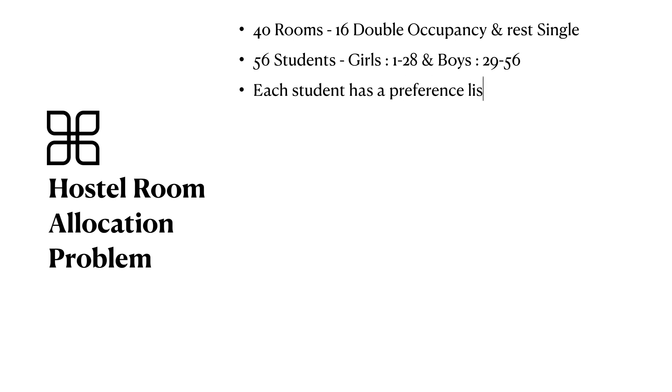Each student has a preference rank for the 40 rooms that can be expressed as the following function which is 1-1 and onto. Our aim is to allocate rooms such that each student gets a room, and the sum of preferences of the rooms allocated to the students is minimum.